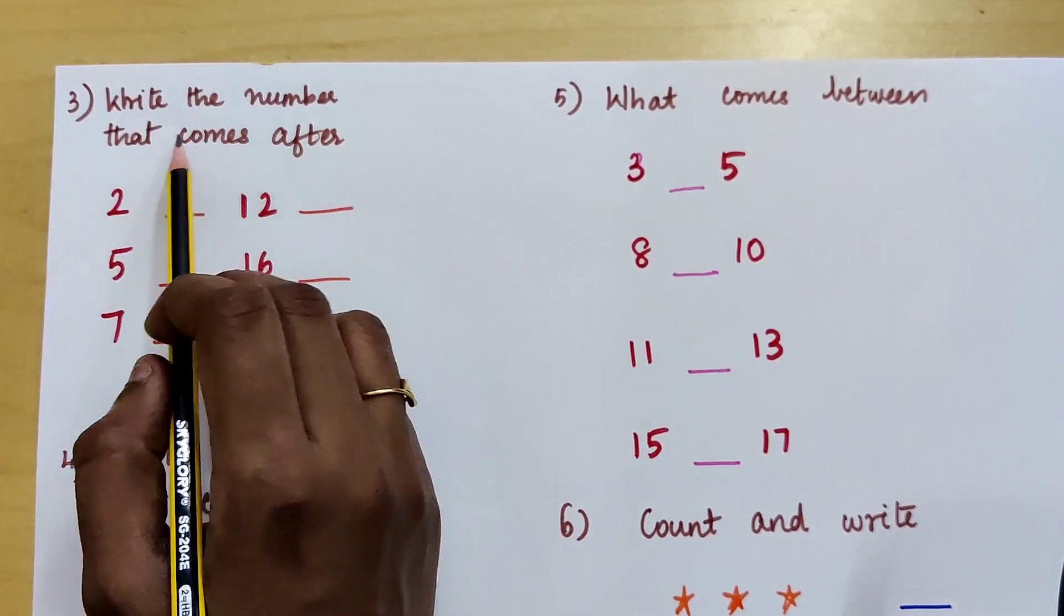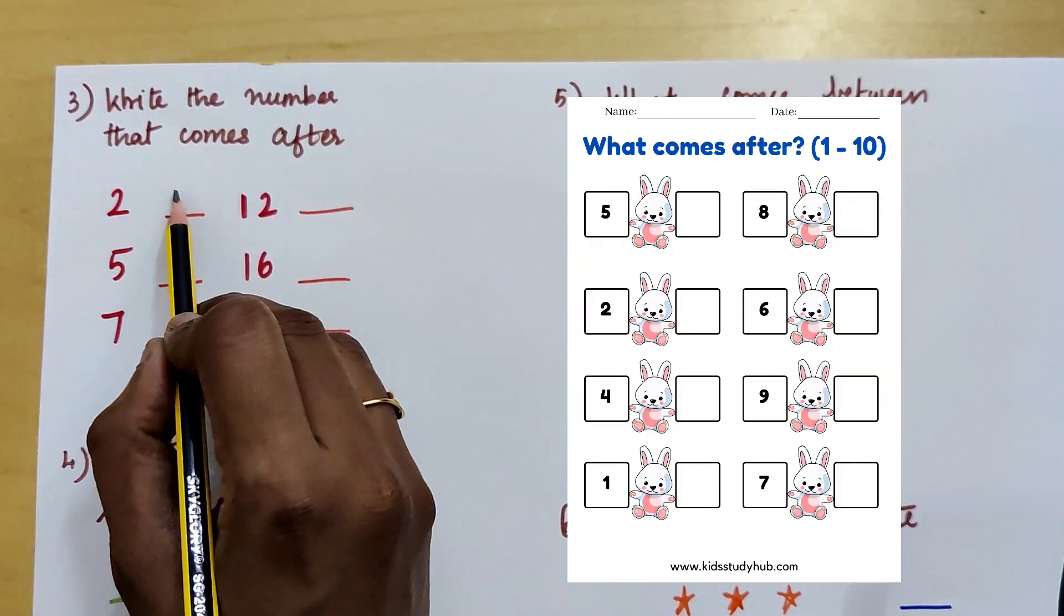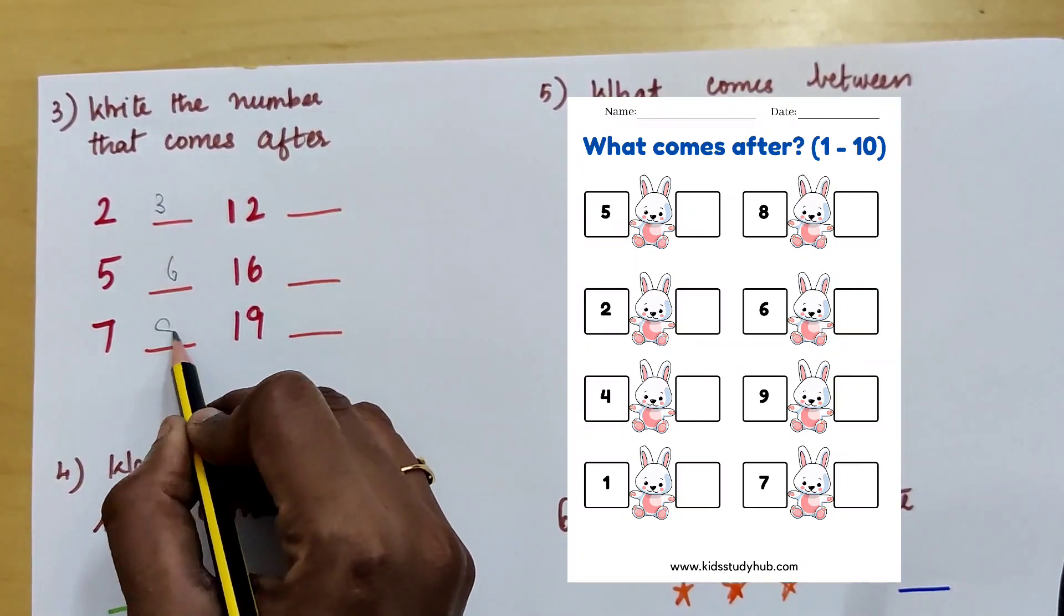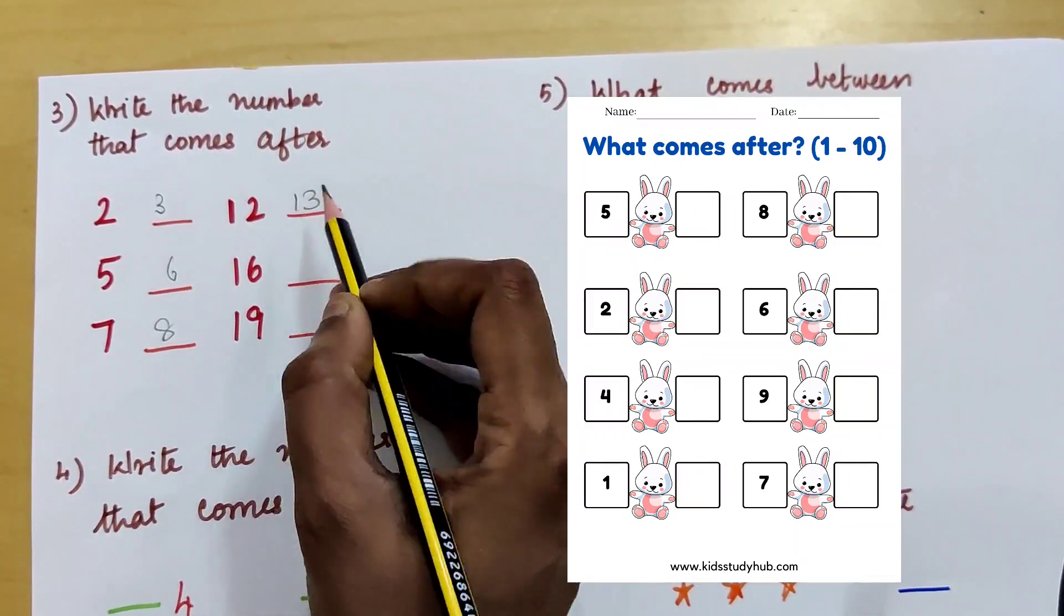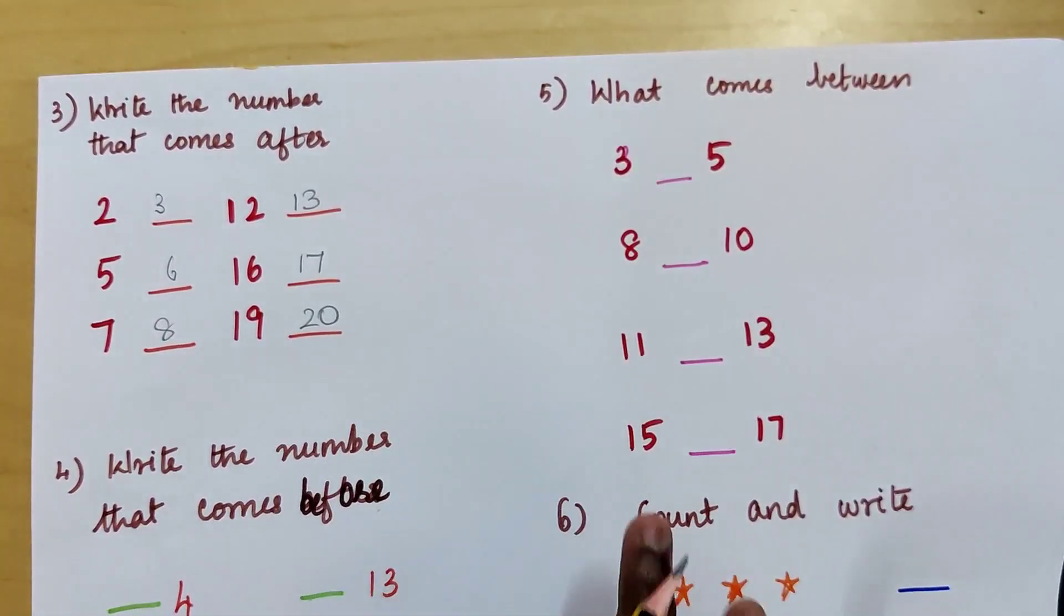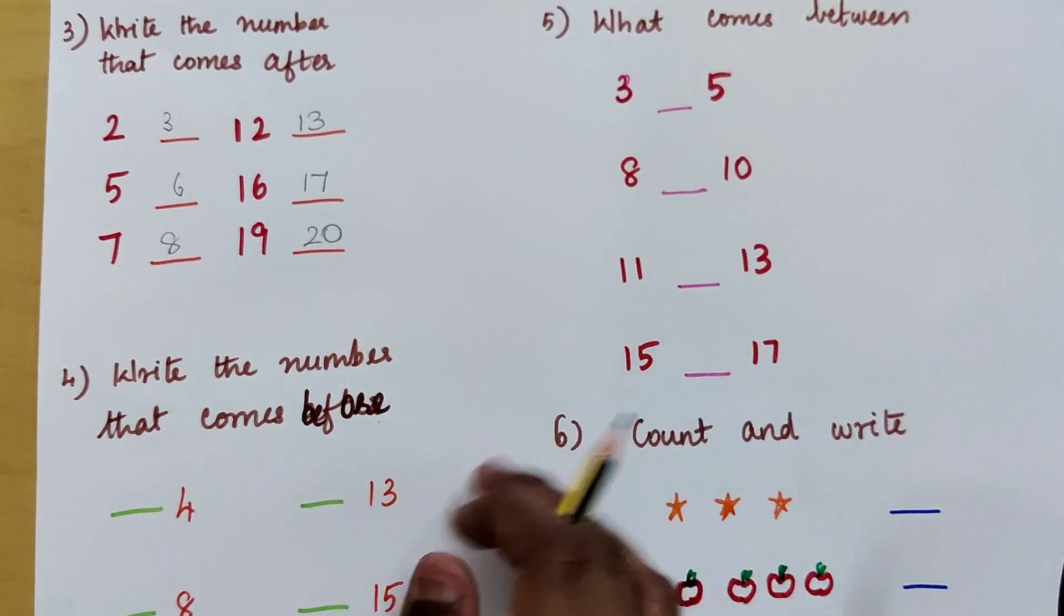Next one is what comes after. So 2 after 3, 5 after 6, 7 after 8, 12 after 13, 16 after 17, 19 after 20.